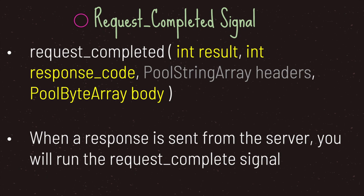The request completed signal runs after a response is sent from the server. It comes with four arguments that represent different information the server will respond back to you. The first is the result enumeration type — if everything went OK, this will most likely be integer value zero. The second argument is the response code enumeration type, an integer value ranging from 100 through 510. In most cases, if all went well, you will receive 200 or 201. The third argument is headers. And lastly, the data sent from the server will be in the fourth argument called body, which is a PoolByteArray data type.